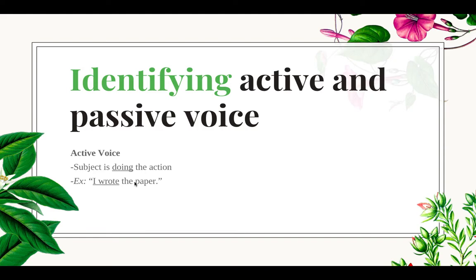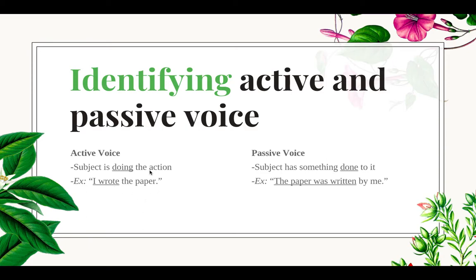When something's in the active voice, the subject is doing the action in the sentence — it's very clear. For example, 'I wrote the paper' is active voice because it's clear who is doing the action of writing. On the other hand, with the passive voice, the subject has something done to it. The same idea becomes passive voice when you say 'the paper was written by me' — that word 'was' is often a clue.